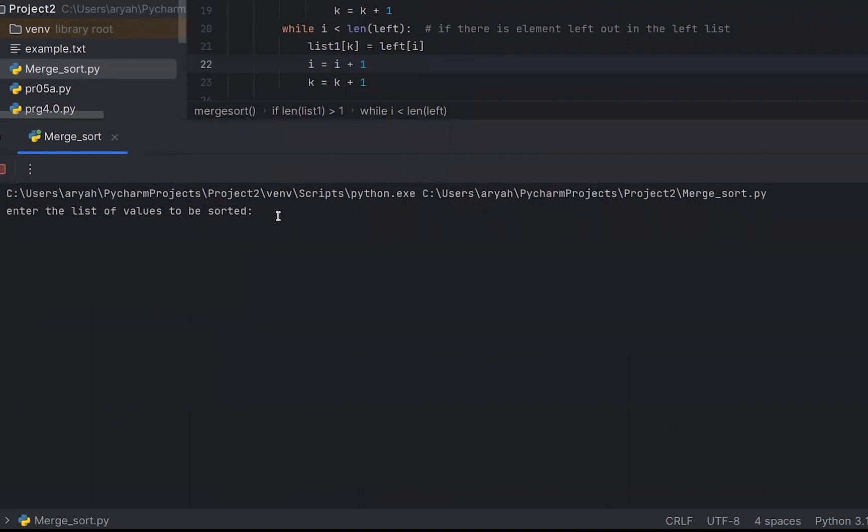Next, we will list some elements. So we will use unsorted elements: 90, 20, 50, 1, 55. So we will use 5 elements, unsorted elements, just unordered elements.